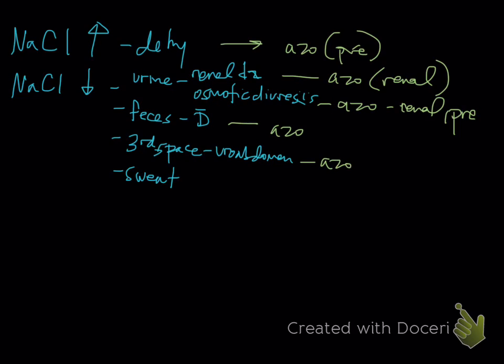Third space uroabdomen - you're going to expect post-renal. This would be pre-renal from dehydration. Anytime you have azotemia, you can have an increase in anion gap due to CLUE and a titrational metabolic acidosis.